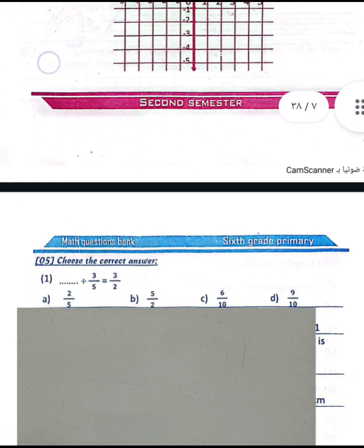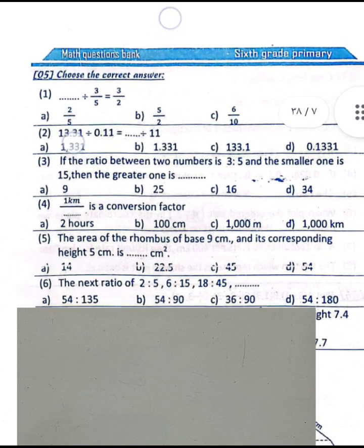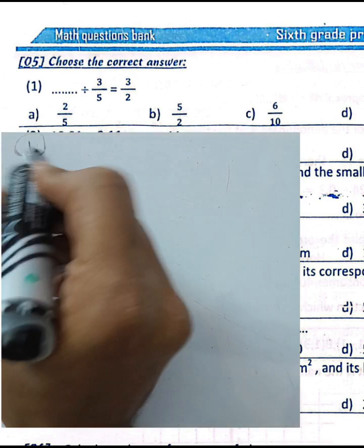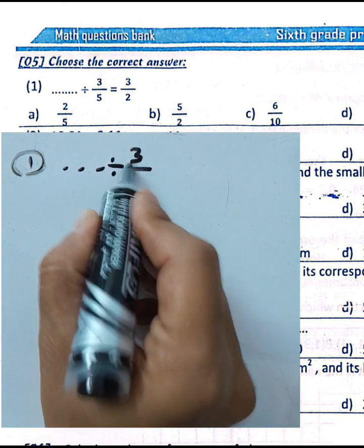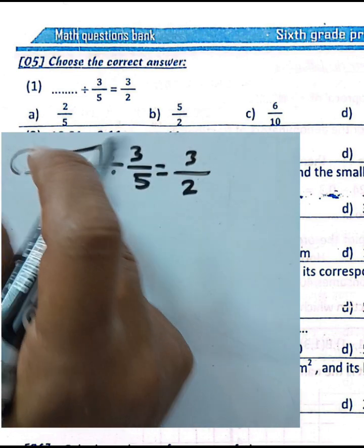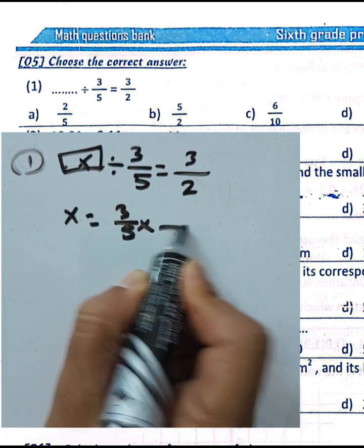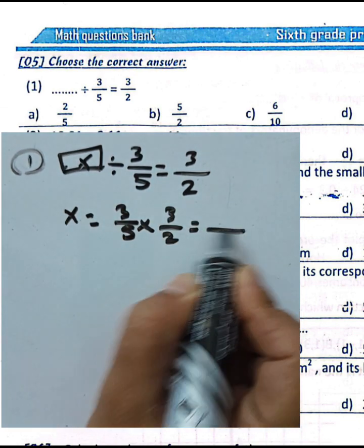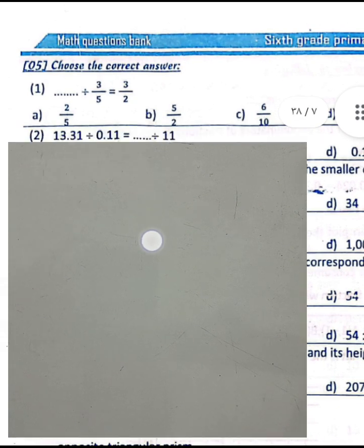Question number five, number one: find the dividend. The divisor is 1/5 and the quotient is 3/2. To find the dividend, multiply the divisor by the quotient: 1/5 times 3/2. Three times three equals nine, and two times five equals ten, so the dividend is nine over ten.